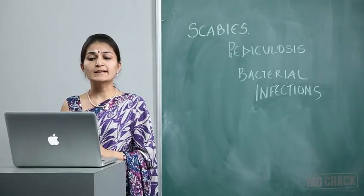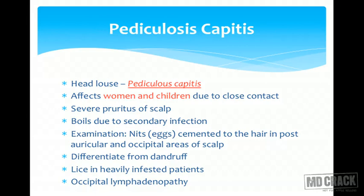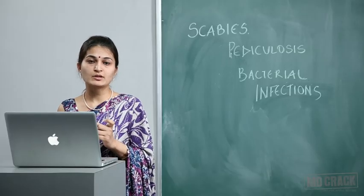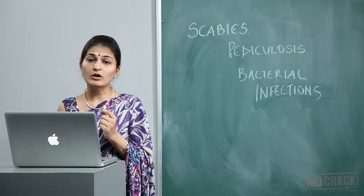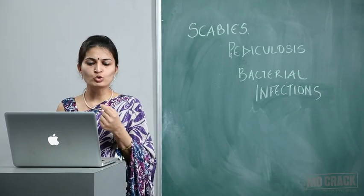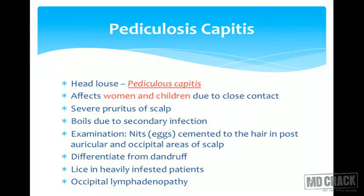Coming to the next infestation, pediculosis capitis, it is caused by the head louse Pediculus capitis. It affects women and children due to close contact. The patient presents with severe pruritus of the scalp and can develop boils due to secondary infection. On examination, we see nits or eggs cemented to the hair, especially in the posterior auricular and occipital areas. Nits are differentiated from dandruff — nits are cemented to the hair and move only distally, while dandruff is dry flakes that move to and fro. In heavily infested patients, lice are also visible, and such patients may even present with occipital lymphadenopathy.